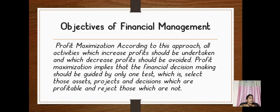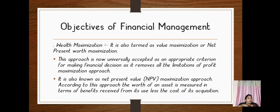Profit maximization implies that financial decision-making should be guided by one test: select those assets, projects, and decisions which are profitable, and reject those which are not. Wealth maximization, as the term denotes, means value maximization or net present worth maximization. It is uniformly accepted as an appropriate criterion for financial decisions, as it removes all the limitations of the profit maximization approach. It is also known as net present value maximization. According to this approach, the worth of an asset is measured in terms of benefits received from its use less the cost of its acquisition.